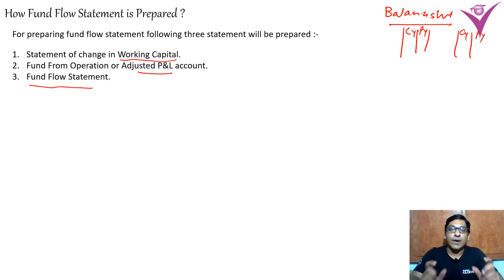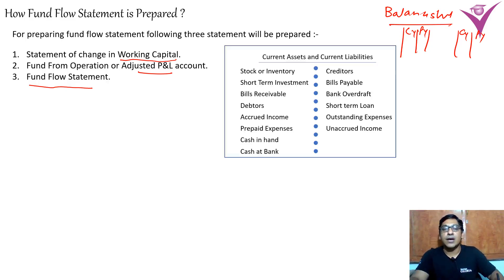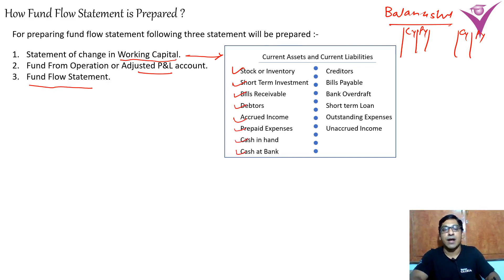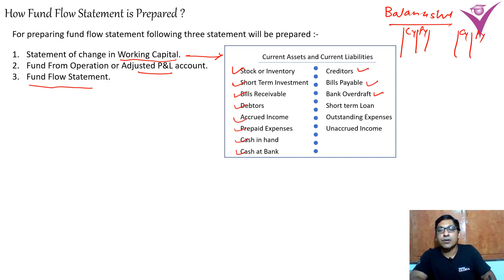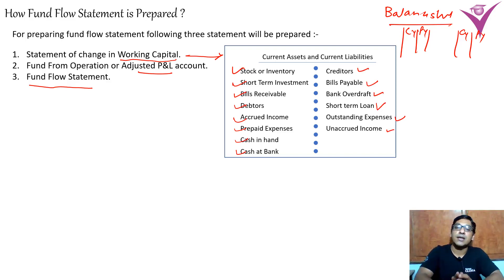When we look at working capital — that is current assets minus current liabilities — which items are current assets? Stock, short-term investment, bills receivable, debtors, accrued income, prepaid expenses, cash in hand and cash at bank. All these are the current assets we need to consider. Current liabilities include creditors, bills payable, bank overdraft, short-term loan, outstanding expenses, and unearned income — these are the current liabilities we need to consider.